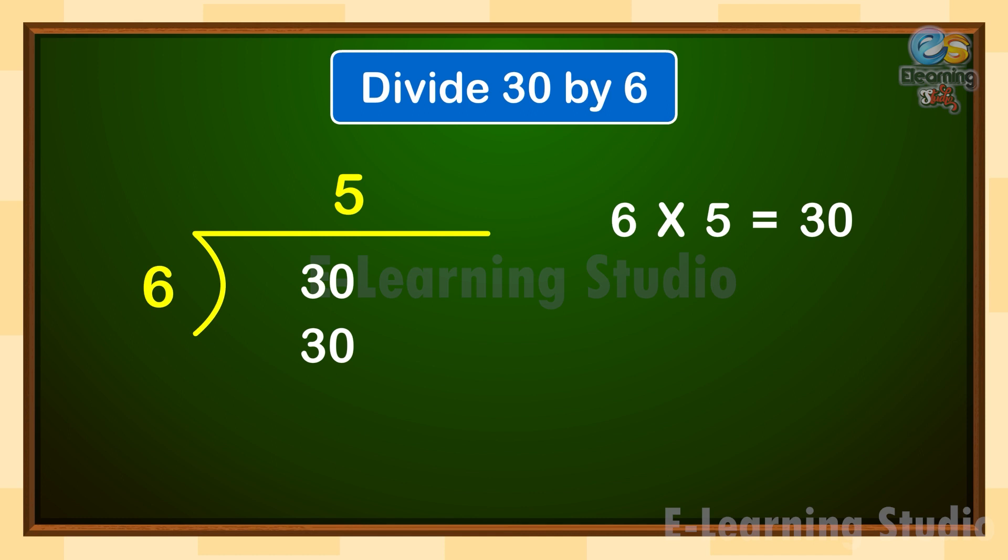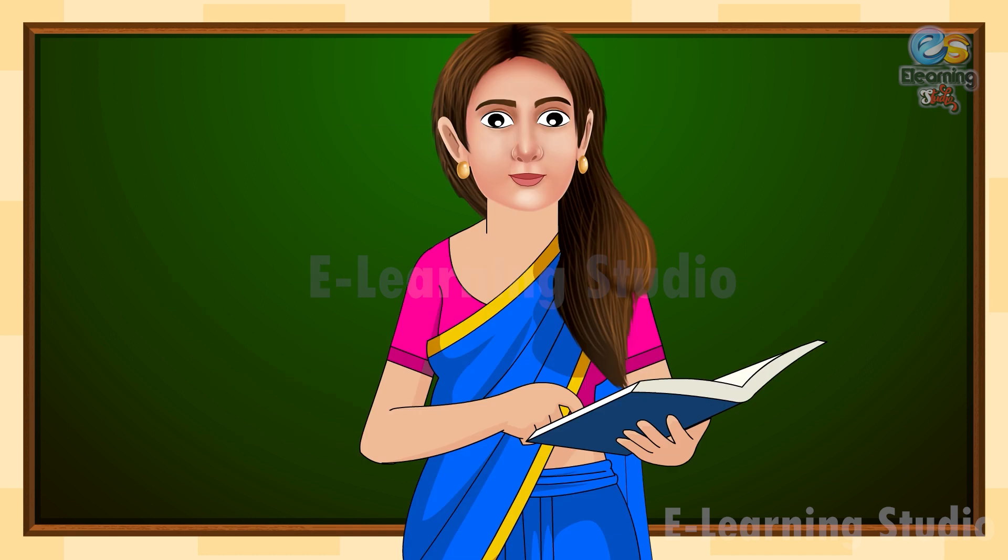Subtract 30 from 30 to get 0. So 30 divided by 6 is equal to 5.